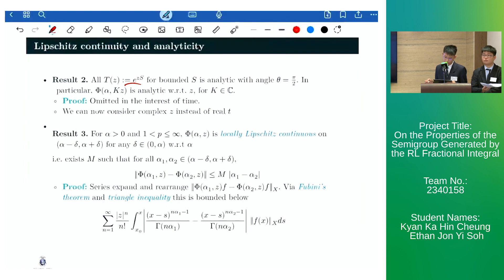In particular, we have that phi of alpha kz is analytic with respect to z for k being a complex number. The proof of this is omitted in the interest of time. However, note that we now consider a complex z instead of a real t.